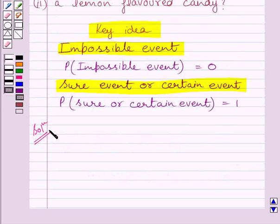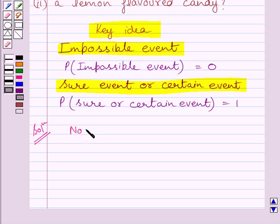We are given that a bag contains lemon flavored candies only and we have to find the probability of taking out an orange flavored candy. Now, we know no outcome will give an orange flavored candy, because the bag contains lemon flavored candies only. So we can write: no outcome will give an orange flavored candy.